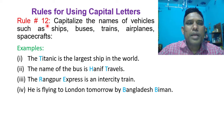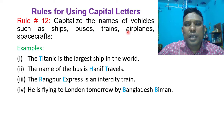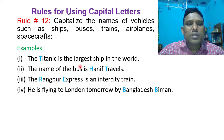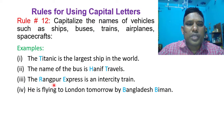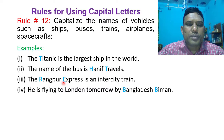Rule number 12: Capitalize the names of vehicles such as ships, buses, trains, airplanes, and spacecrafts. For example, the Titanic is the largest ship in the world — the first letter T in Titanic is capitalized. Hanif Travels is the name of a bus — H in Hanif and T in Travels are capitalized. The Rangpur Express is an intercity train — R in Rangpur and E in Express are capitalized. He is flying to London tomorrow by Bangladesh Biman — B in Bangladesh and B in Biman are capitalized because Bangladesh Biman is the name of an airplane.